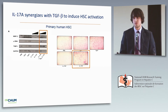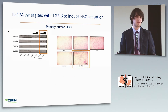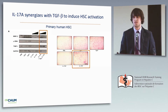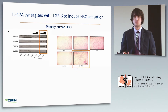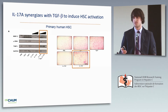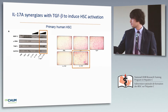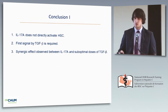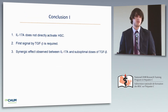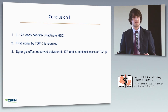We validated these results using primary human stellate cells, and as shown in orange, we observed the same phenotype. When cells were stimulated with IL-17A and suboptimal doses of TGF-beta, we observed robust activation of the stellate cells. The first conclusion is that IL-17A cannot directly activate stellate cells, that TGF-beta is required, and that there is a synergy between these two cytokines.